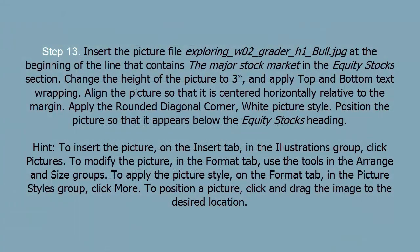Step 13: Insert the picture file Exploring W02 Greater H1 Bull at the beginning of the line that contains 'the major stock market' in the Equity Stock section. Change the height of the picture to 3 inches and apply top and bottom text wrapping. Align the picture so that it is centered horizontally relative to the margin. Apply the rounded diagonal corner white picture style. Position the picture so that it appears below the Equity Stocks heading.